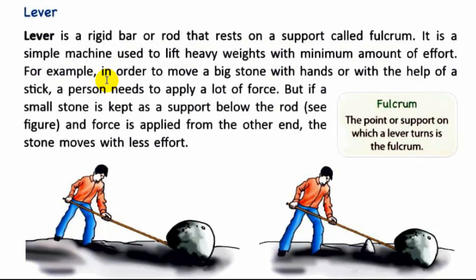For example, in order to move a big stone with hands or with the help of a stick, a person needs to apply a lot of force. But if a small stone is kept as a support below the rod — see figure — and force is applied from the other end, the stone moves with less effort.